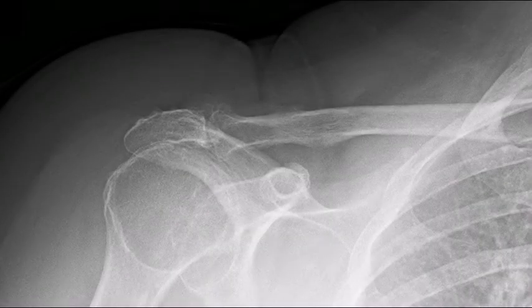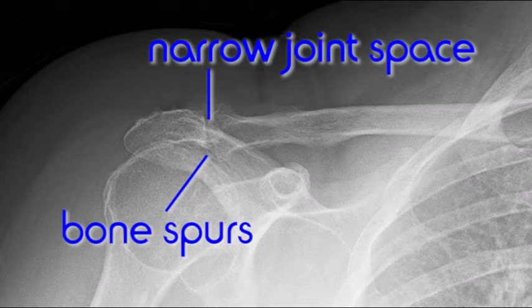X-rays of the acromioclavicular joint may demonstrate narrowing of the joint space and the formation of bone spurs.